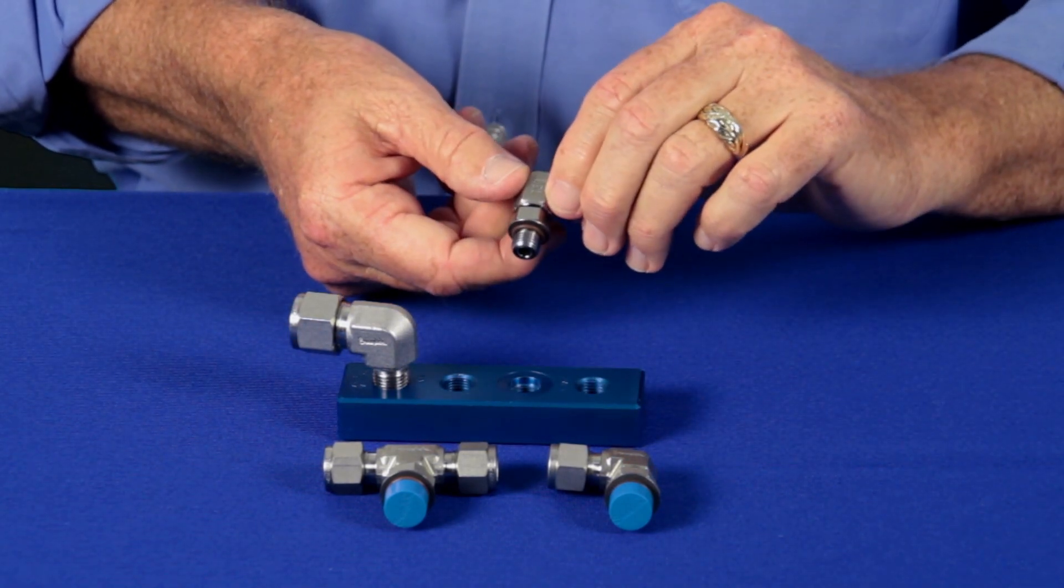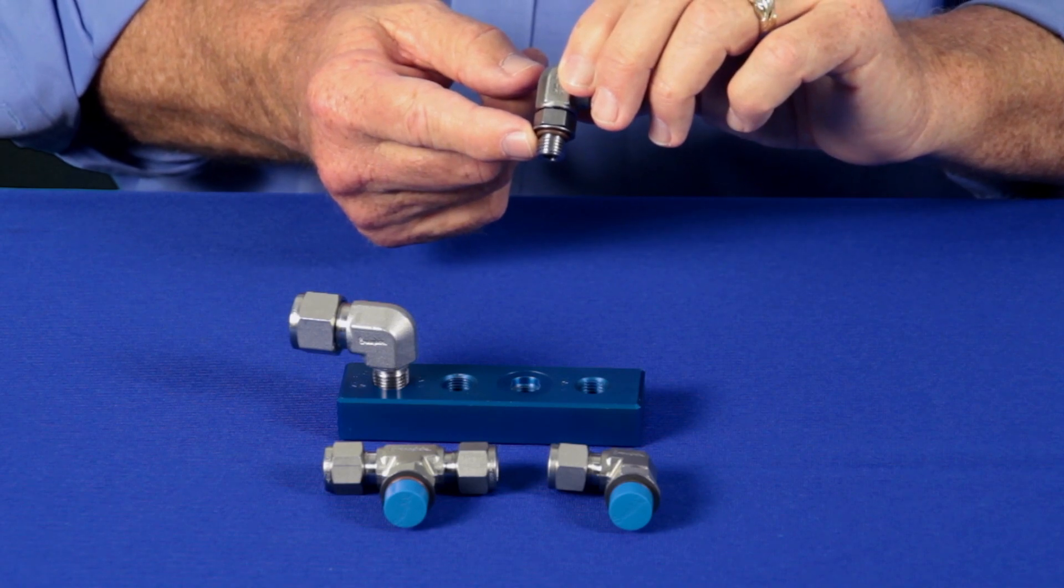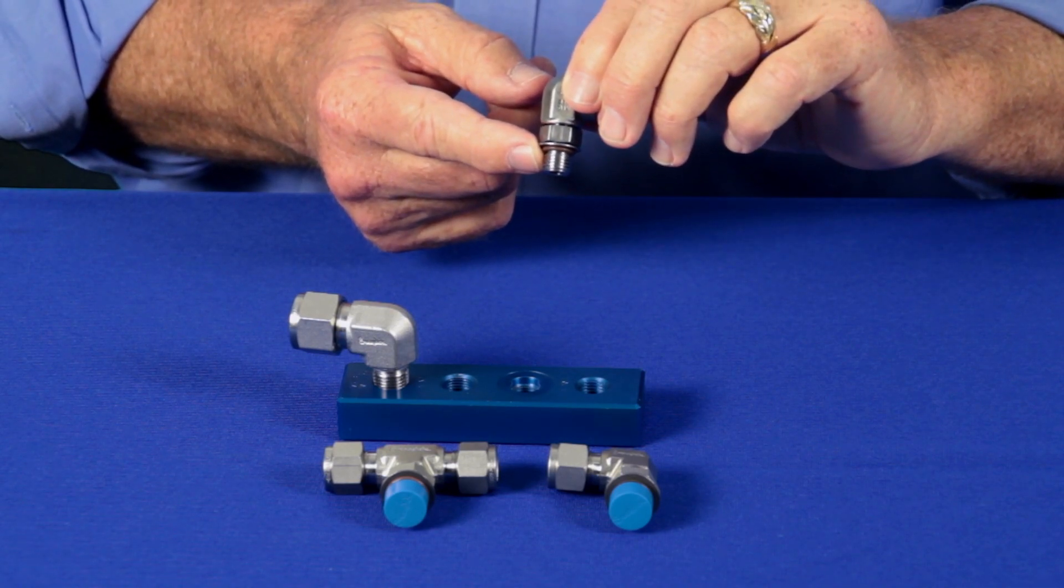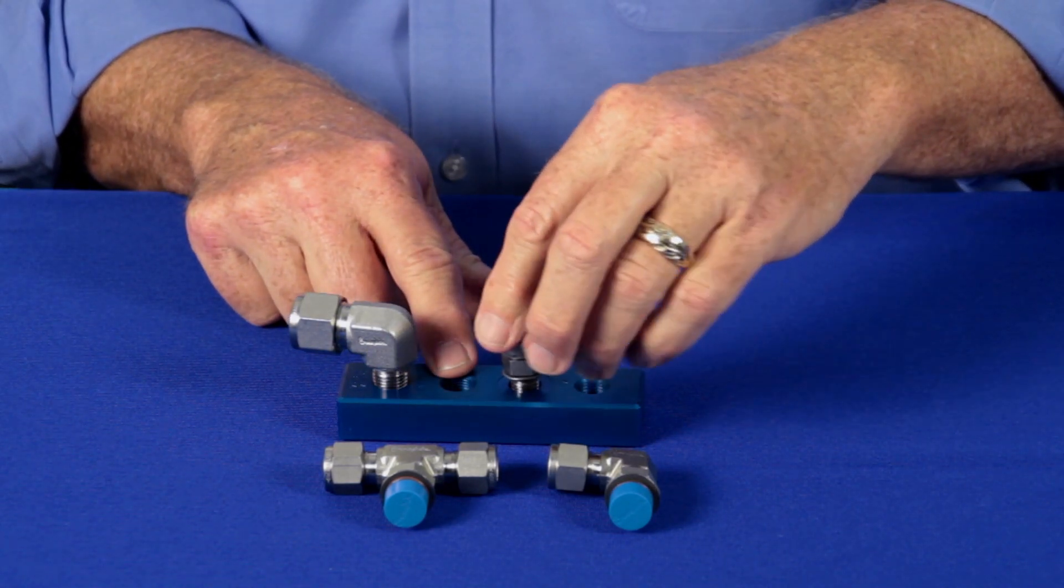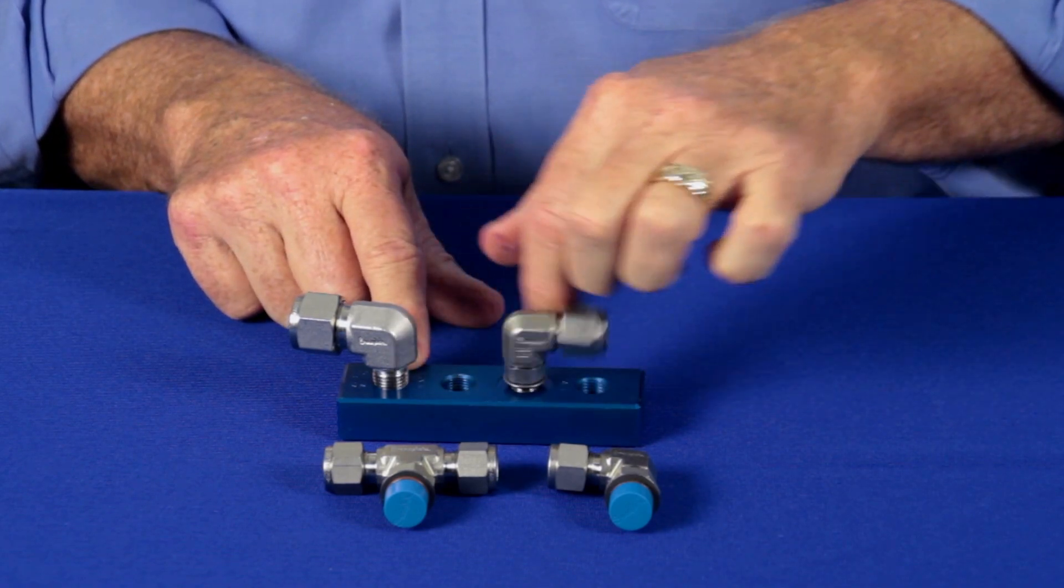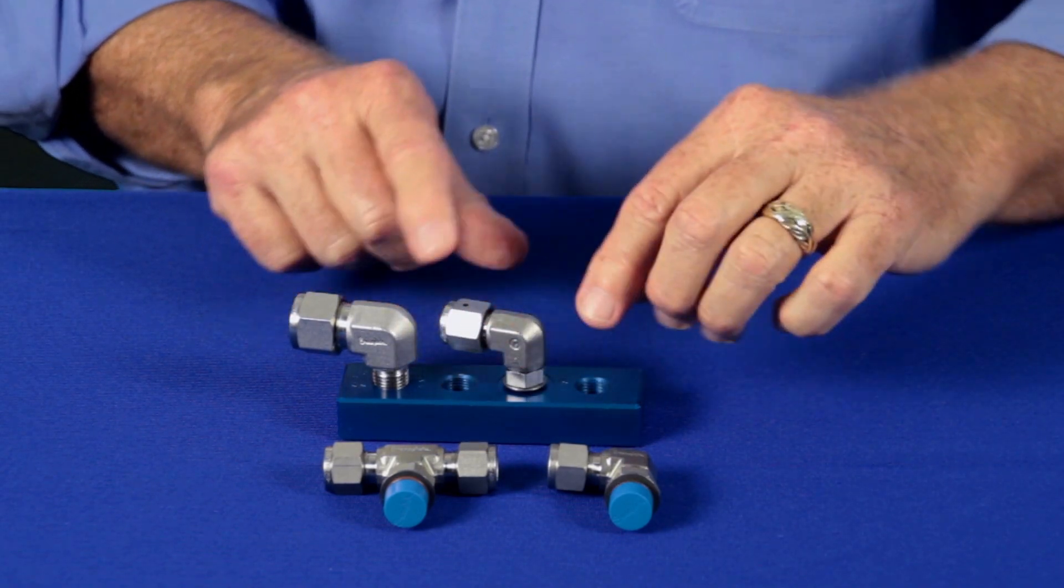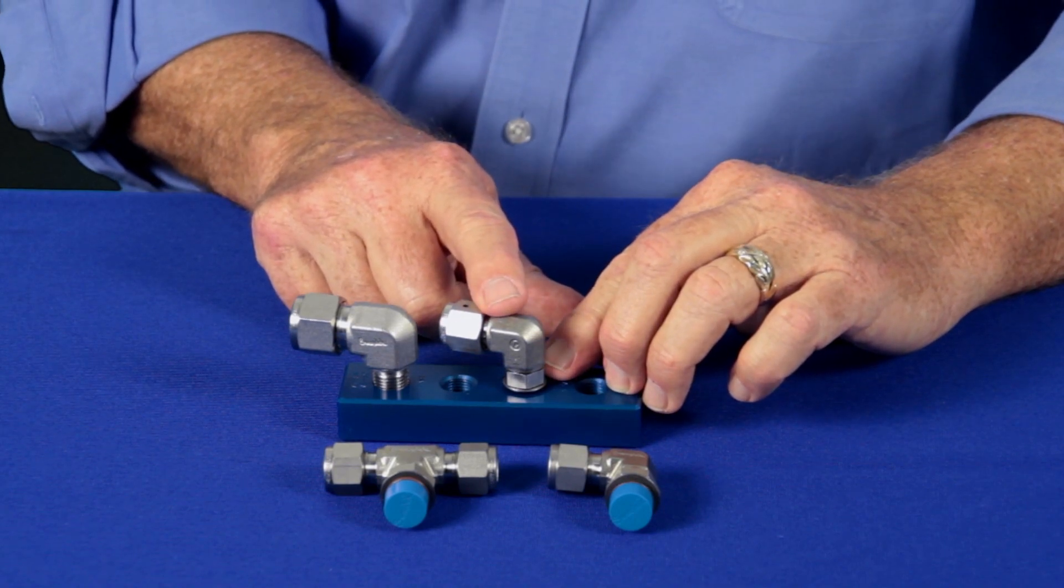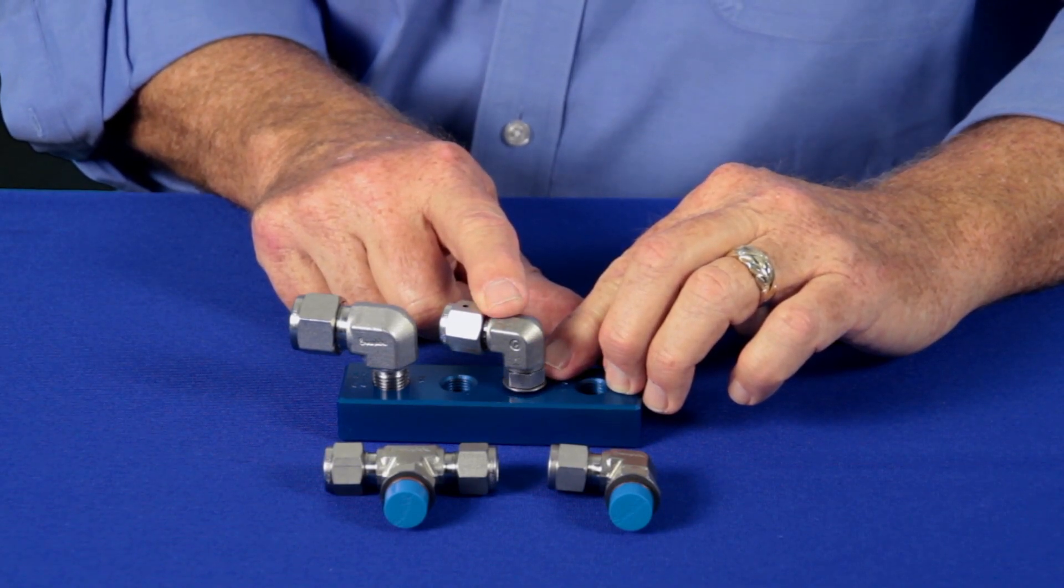With a positionable elbow, they use straight threads and seal on an O-ring. So as you tighten it down, you can tighten it down and put it in whatever position you want. Then you tighten the jam nut and it seals against the O-ring.